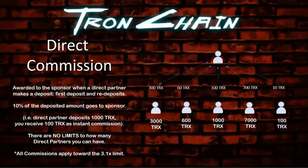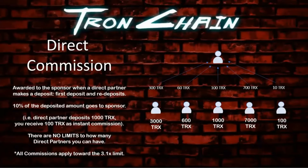The direct commission is awarded to a sponsor when a direct partner makes a deposit. It applies to the first deposit and any future redeposits — it is 10% of the deposited amount. If your partner deposits 1,000 TRX, you will receive 100 TRX as your instant commission. There are no limits to how many direct partners you can have. TronChain is a uni-level structure and all commissions apply towards the 3.1× limit.